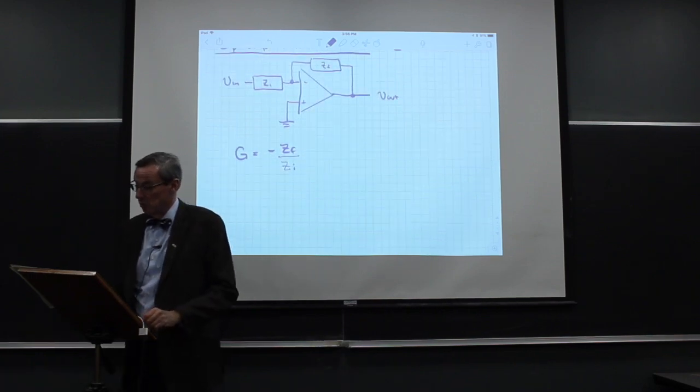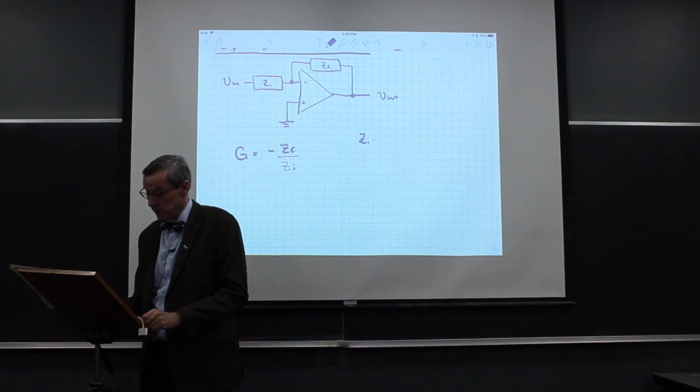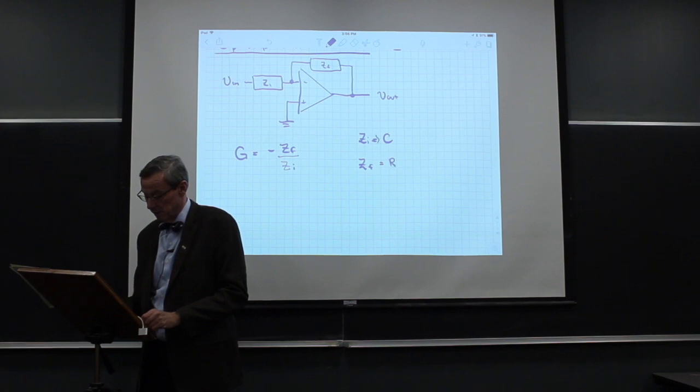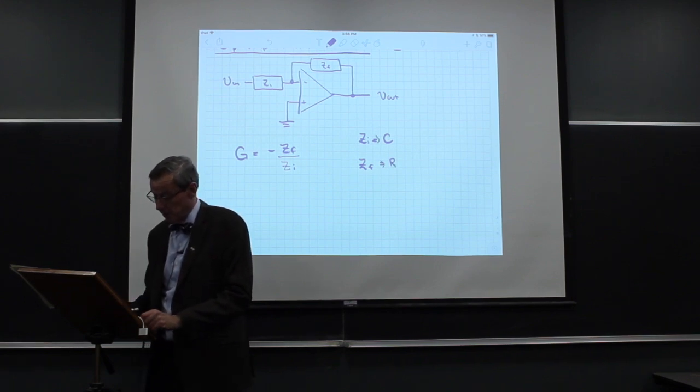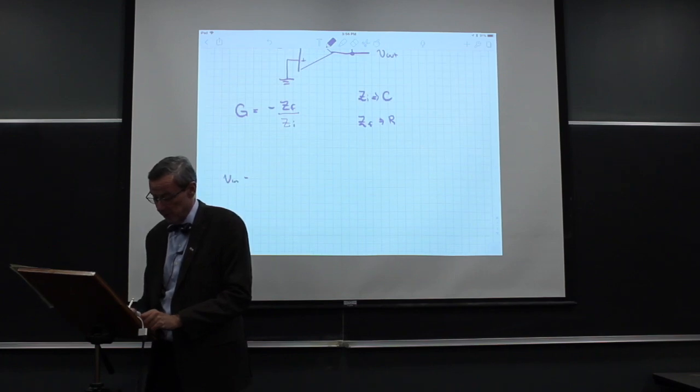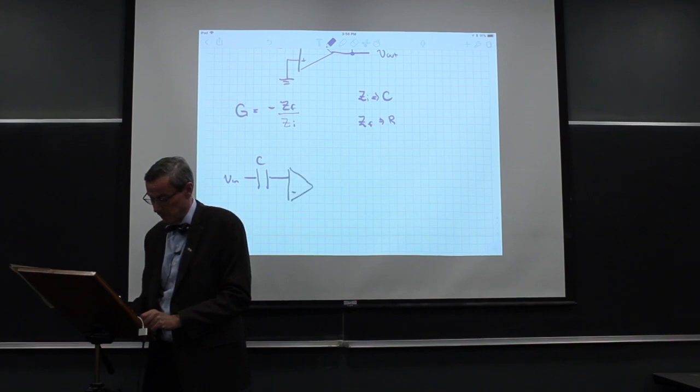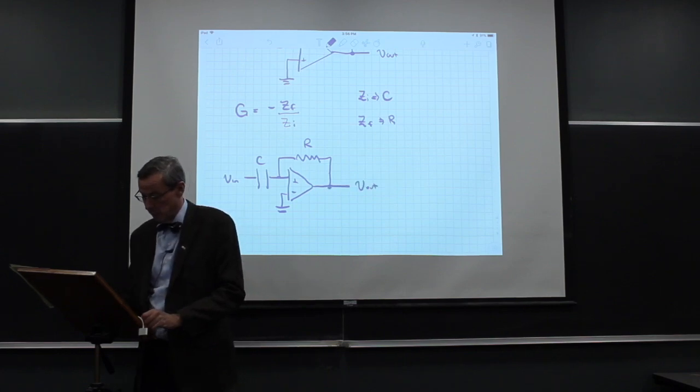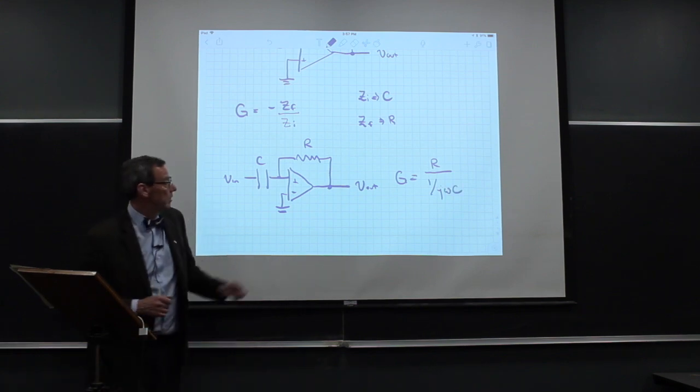And now what we'd like to do is let's just take Z_IN to be a capacitor and Z feedback to be a resistor. So we have a slightly modified circuit here. We have V_IN coming in through a capacitor into the op amp, feedback through a resistor. So the gain is going to be R over 1 over jωC. Just from that rule.